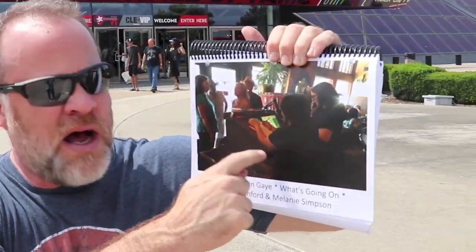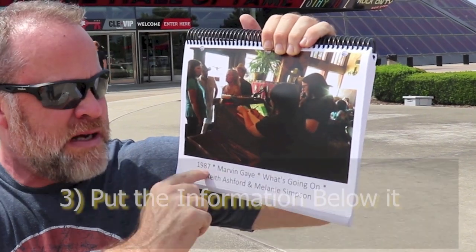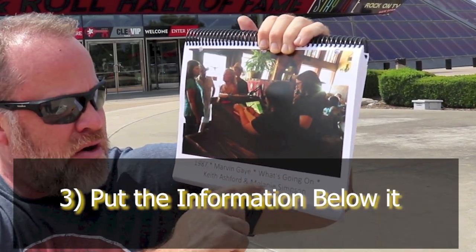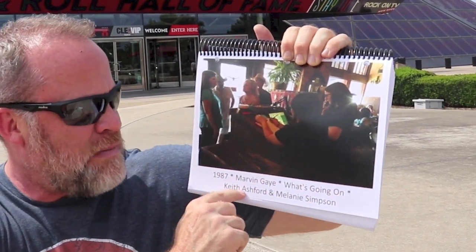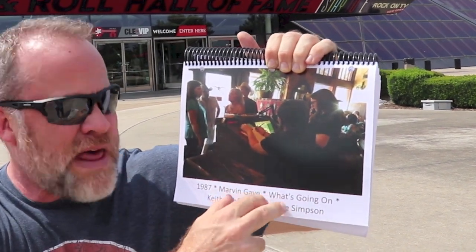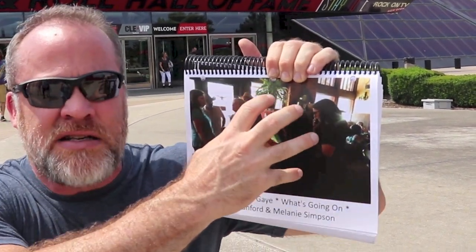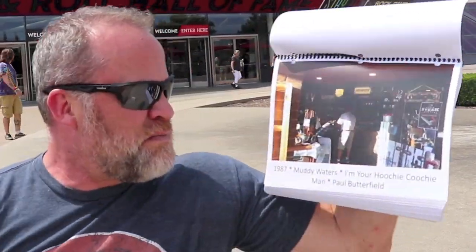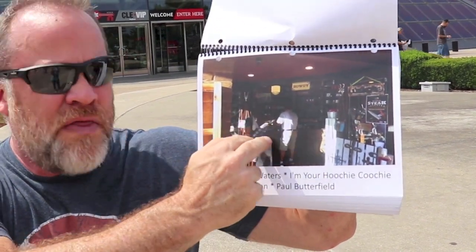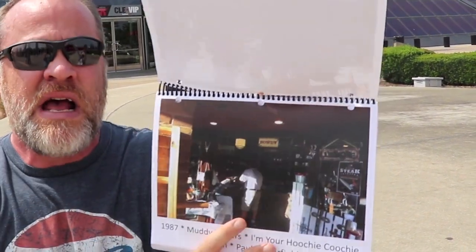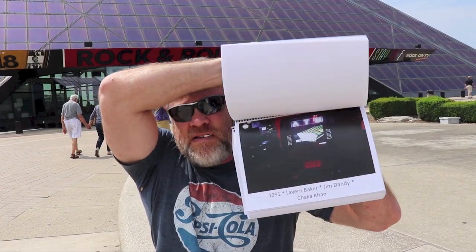Here's the PowerPoint. I then took each one of the PowerPoint pictures and put the artist and their year below it. For example, 1987 — Marvin Gaye, 'What's Going On,' inducted by Keith Ashford and Melanie Simpson. I took that data and put it on top of the picture. The next person inducted was Muddy Waters — 'Hoochie Coochie Man,' inducted by Paul Butterfield. I just put them in sequence, and when I want to remember the data I take a mental walk around my mind palace.